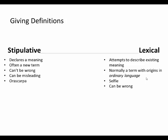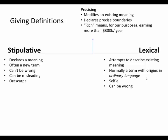Now there are a couple of other types of definitions that fall somewhere between stipulative and lexical on this scale. One is a precising definition. A precising definition involves a certain amount of stipulation, but it also involves the ordinary meaning of a word, because it starts with the existing meaning and then modifies it — declaring precise boundaries so that it becomes precise. For example, the word 'rich' is vague, but suppose you needed it to be precise in a legal context or a tax form. You'd say 'rich, for our purposes, means earning more than $300,000 a year.' A phrase like 'for our purposes' is a telltale sign of a precising definition, indicating awareness of the ordinary definition while slightly modifying it.